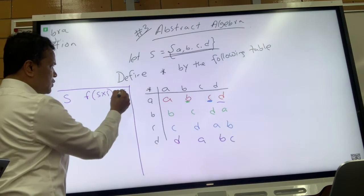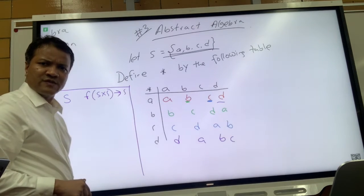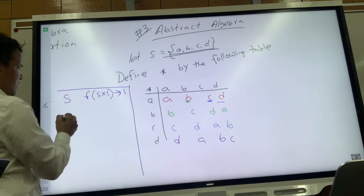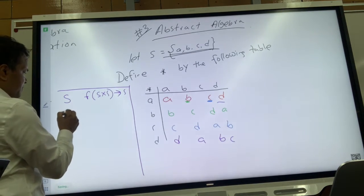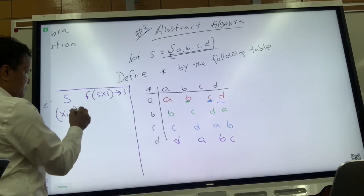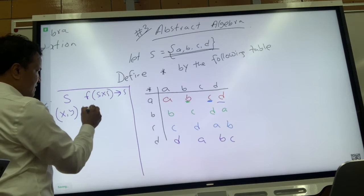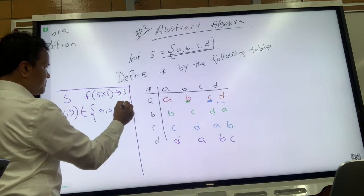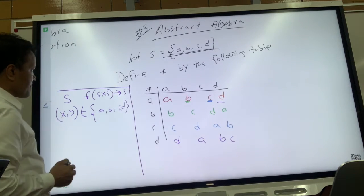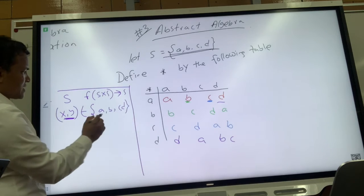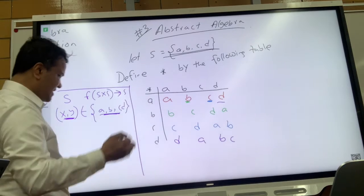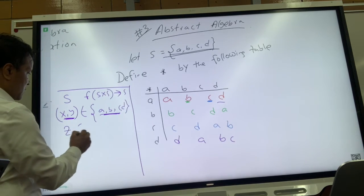So let's take only two elements from this set which consists of four elements, and those two elements are x comma y. x comma y belongs to {a, b, c, d}, the set which we call S has four elements. Now z is like the x and y map to, right? So z is one element which belongs to {a, b, c, d}, that's kind of satisfying the definition that we gave earlier.